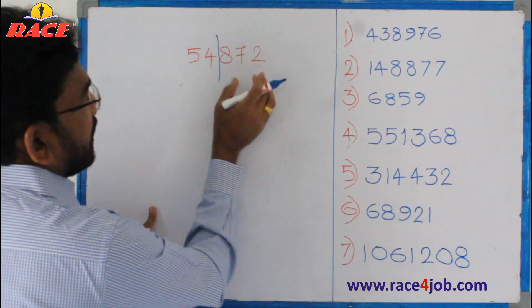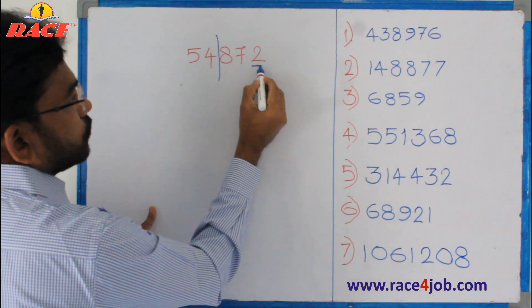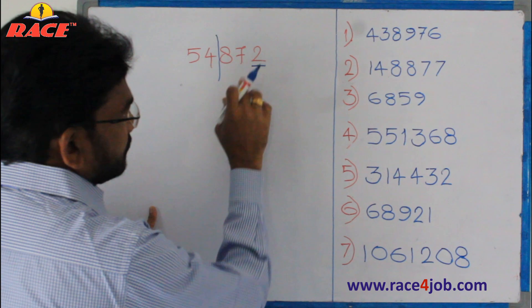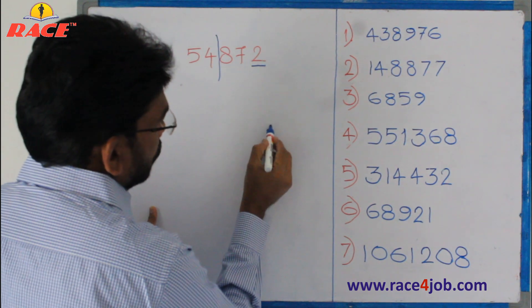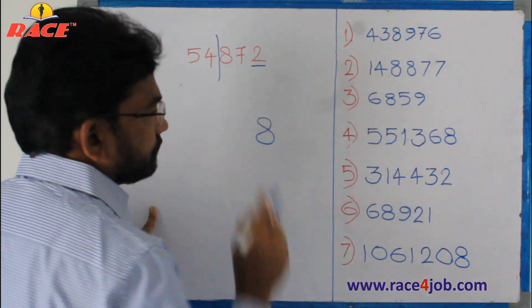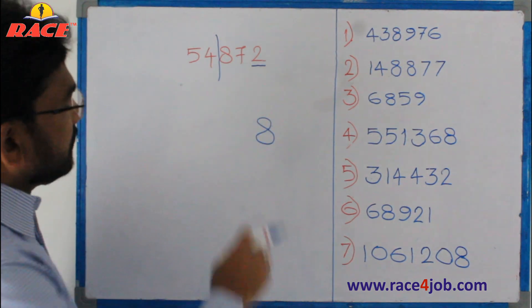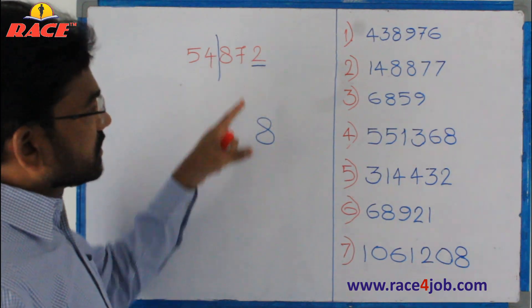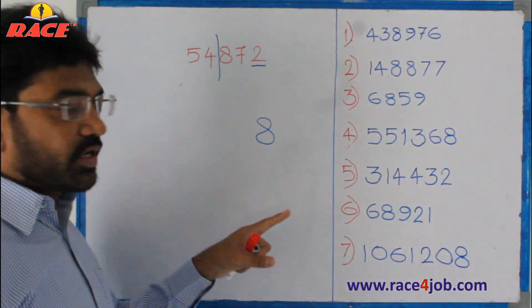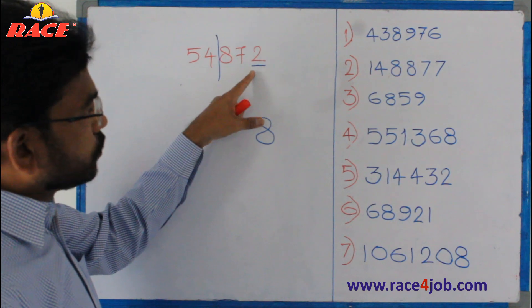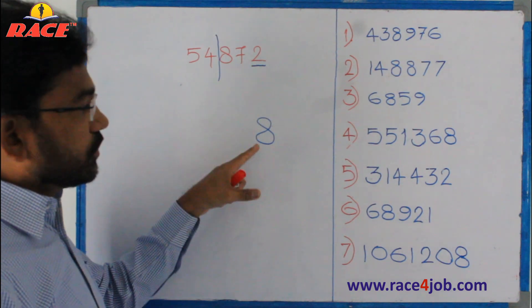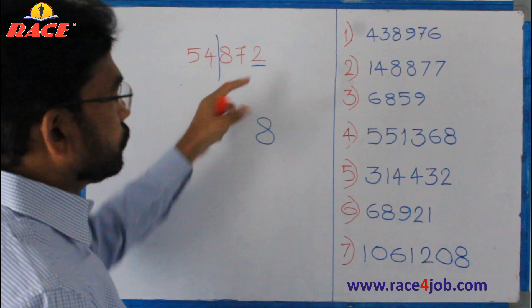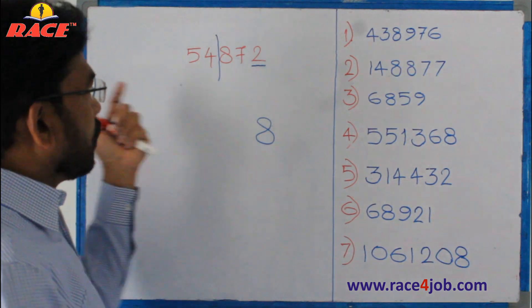Here the right side part is ending with two. If this right side part ends with two, your answer ends with eight. If the right side part ends with eight, then your answer ends with two. So if it is two, eight comes; if it is eight, two comes. The right side part is ending with two, so our answer ends with eight.